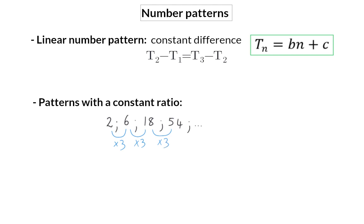So a constant ratio is when term 2 divided by term 1, which in our case is 3, is the same as term 3 divided by term 2, or then of course any term divided by the term just in front of it.